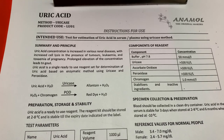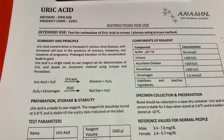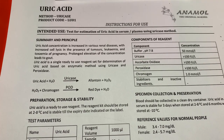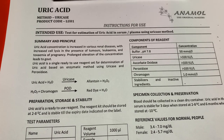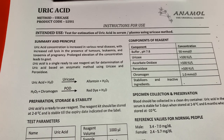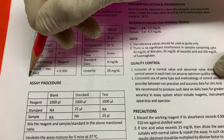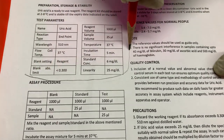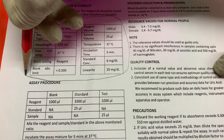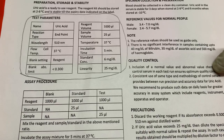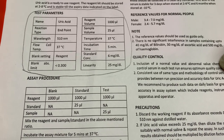Hello everyone. In this video tutorial, we will see how to program a uric acid kit on any semi-automated biochemistry analyzer. Please note that in this video we are using the kit manufactured by Anamo Laboratories Pvt Ltd. To program the kit on any semi-automated biochemistry analyzer, there are multiple pieces of information required, which are mentioned in the instructions for use by the manufacturer. Using this information, you can program any semi-automated biochemistry analyzer.